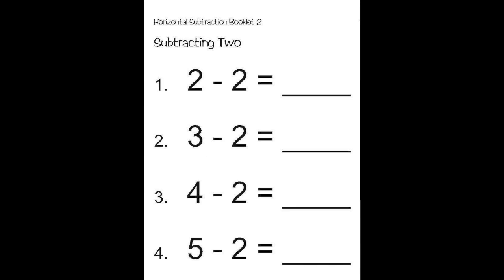Notice that this page goes in order. This is to help you learn and memorize your facts. Now let's do the first one. Here we have 2 minus 2. Well, 2 numbers before 2 is 0. So, 2 minus 2 equals 0. Following that is 3 minus 2, which equals 1, because 1 is 2 numbers before 3. After that is 4 minus 2, which equals 2. And 5 minus 2, which equals 3.